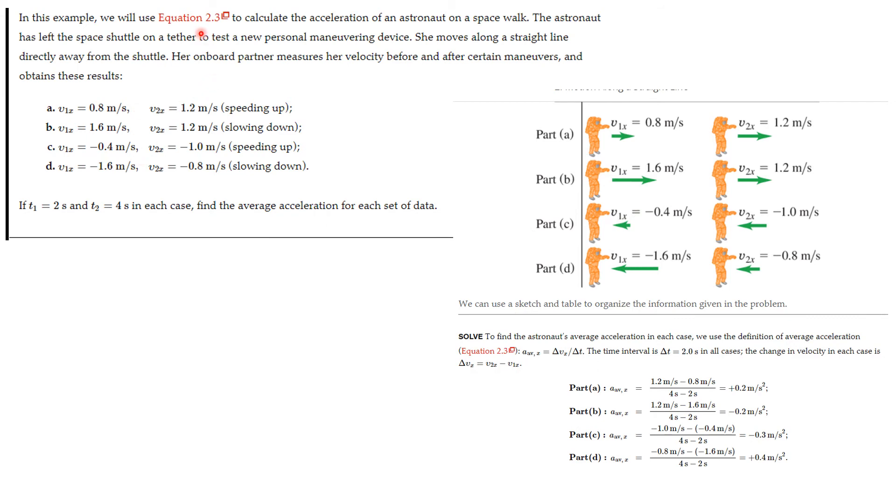In fact, let's look at this one. So we're going to use our equation to calculate the acceleration of an astronaut who's on a spacewalk. So the astronaut has left a space shuttle on a tether. They're not floating off into space. To test a new personal maneuvering device. So they have like a gun that propels them. In this case, she moves along a straight line directly away from the shuttle. And her onboard partner measures her velocity before and after certain maneuvers. So in part A, she starts at 0.8 meters per second and goes to 1.2 meters per second. She's speeding up. But then in B, they're going from 1.6 meters per second to 1.2 meters per second. That is slowing down.